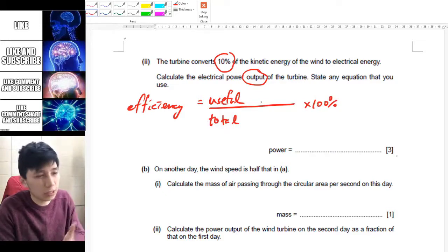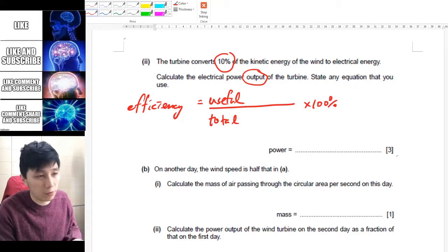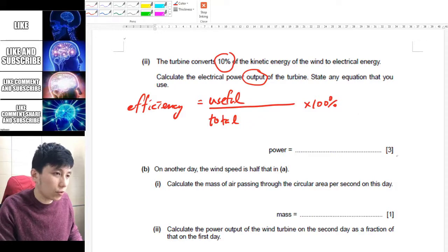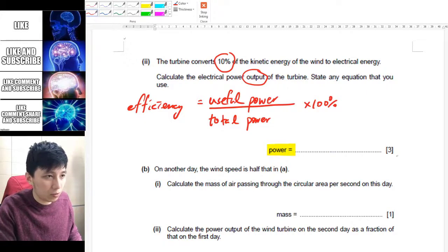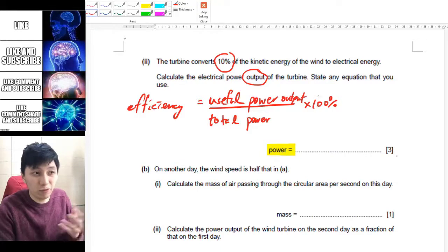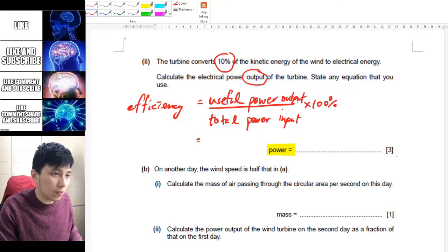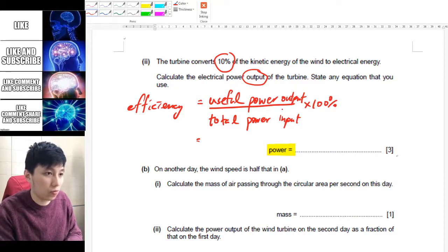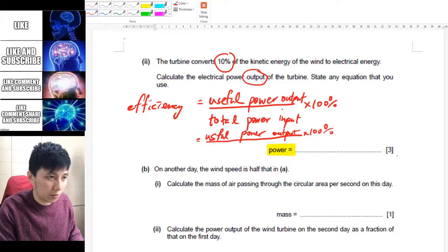The efficiency equation can apply to useful work done over total, useful energy over total, or useful power over total power. The main idea is useful over total. Since the question asks about power, we write: efficiency equals useful power output over total power input. The useful power output is what we don't know, so we can call it P.